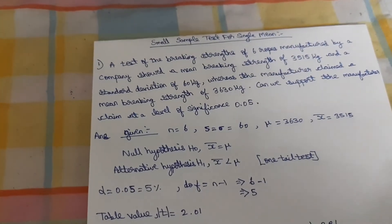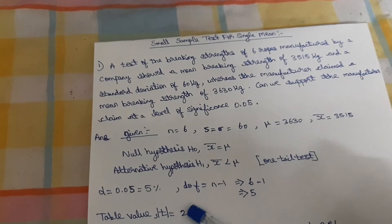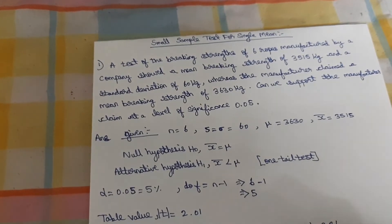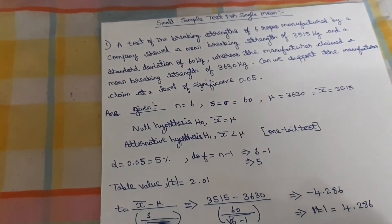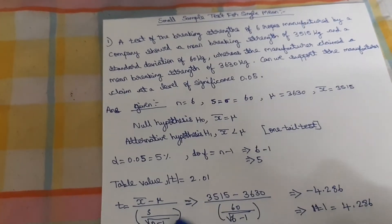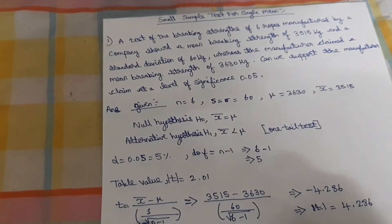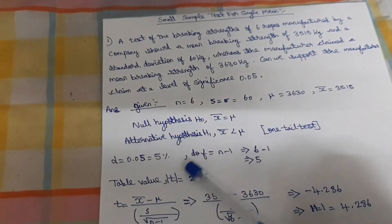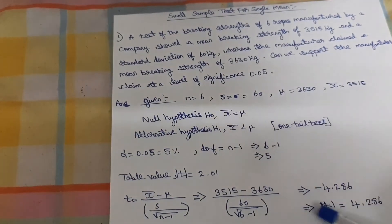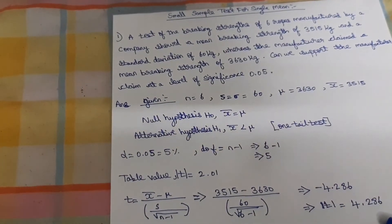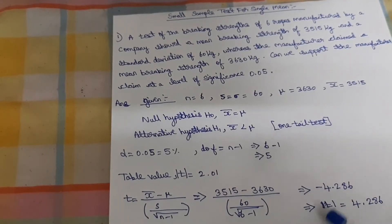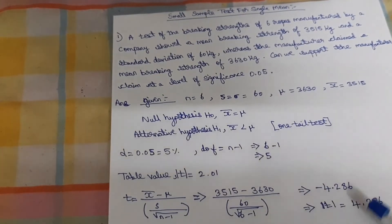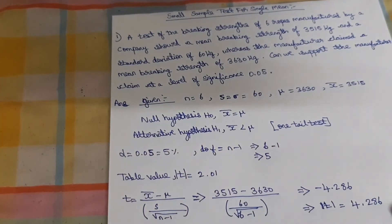The table value is 2.01. Now, the formula is t equal to X bar minus mu, divided by S divided by the square root of n minus 1. If you substitute the given values, you will get the t value as 4.286.